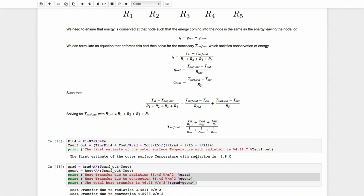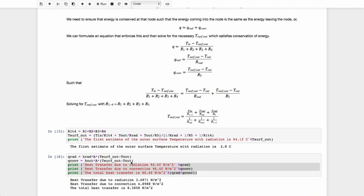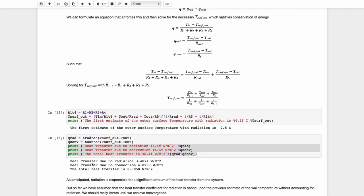then I can see that the first estimate of my outer surface temperature accounting for radiation is 2.8 degrees centigrade. And now I can calculate what the convection and radiation heat transfer is going out. And now I printed out the heat transfer due to radiation, which is 3.4871 watts per meter squared. The heat transfer due to convection is almost 5 watts per meter squared. And of course, the total heat transfer, or the Q, which is going through resistors R1, 2, 3, and 4, is 8.3858.